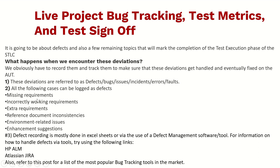All of the following cases can be logged as defects: missing requirements, incorrectly working requirements, extra requirements, reference document inconsistencies, environment-related issues, and enhancement suggestions. Defect recording is mostly done in Excel sheets or via defect management software tools. Popular tools include HP ALM and Atlassian Jira, which are among the most popular bug tracking tools in the market.